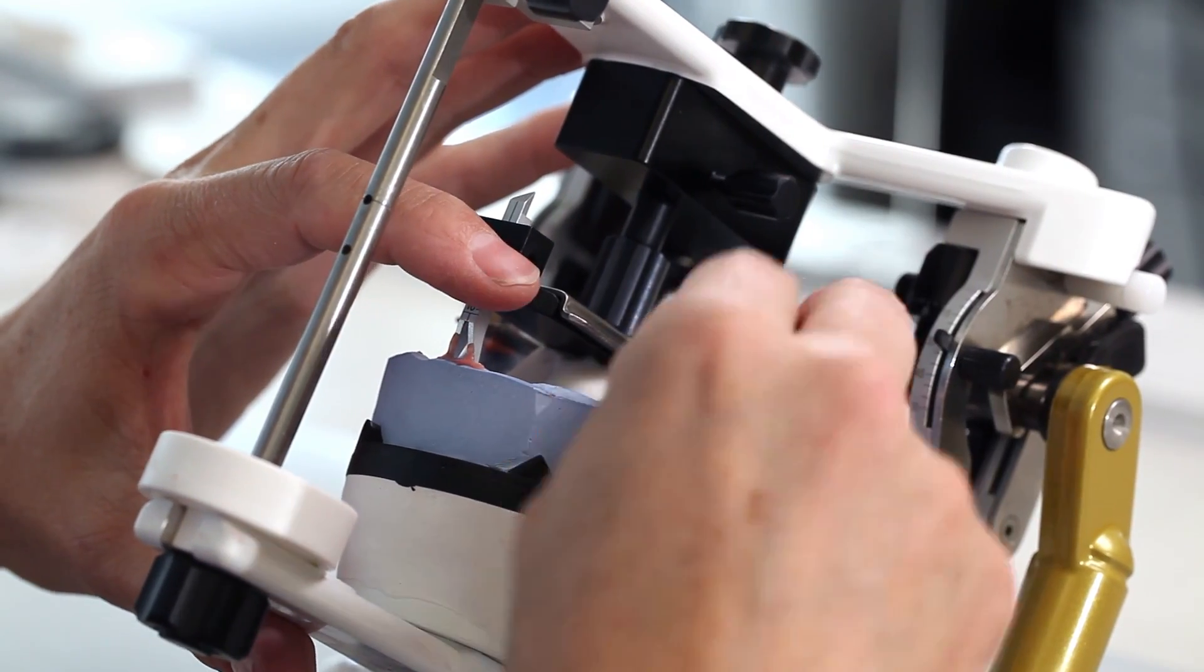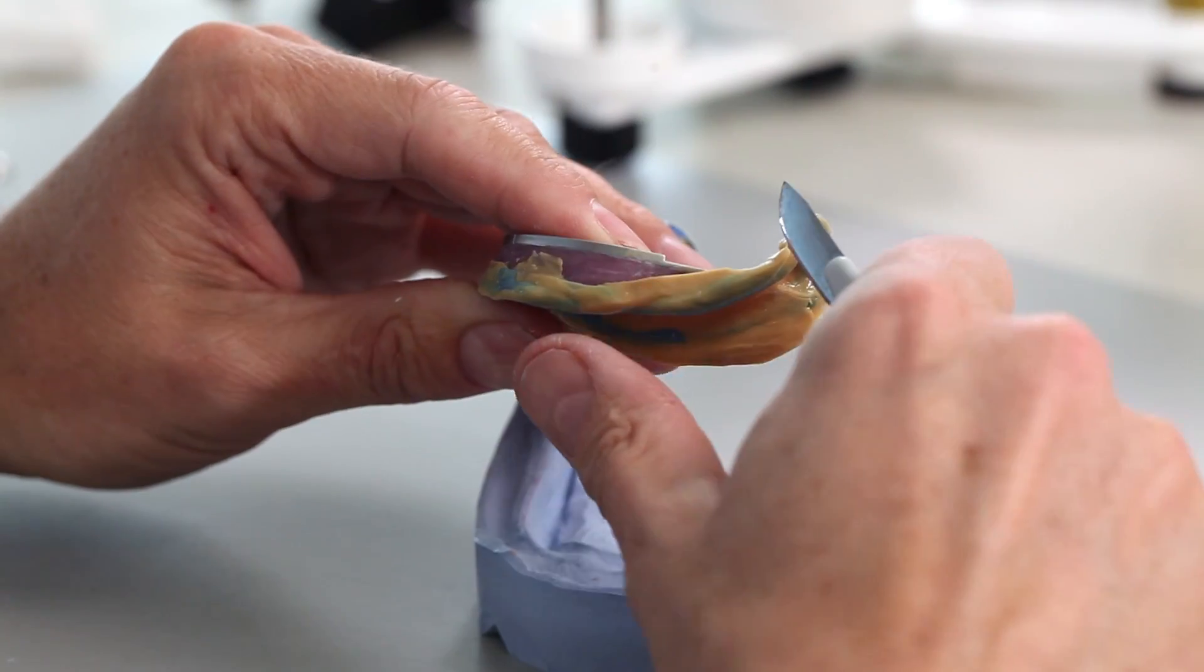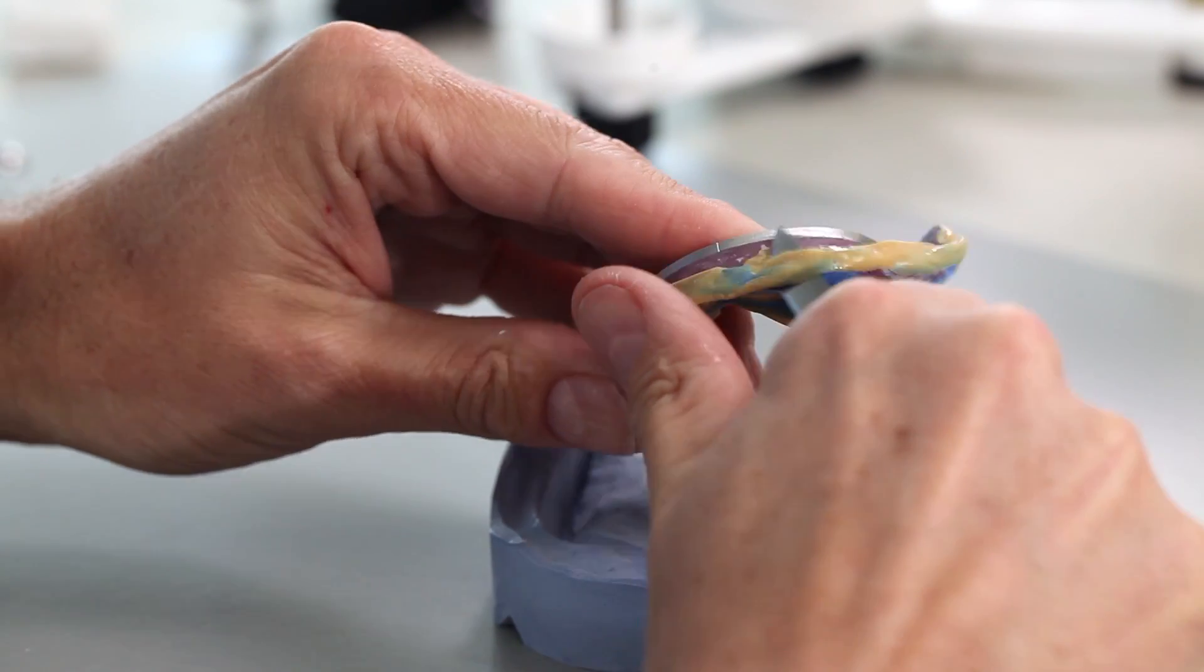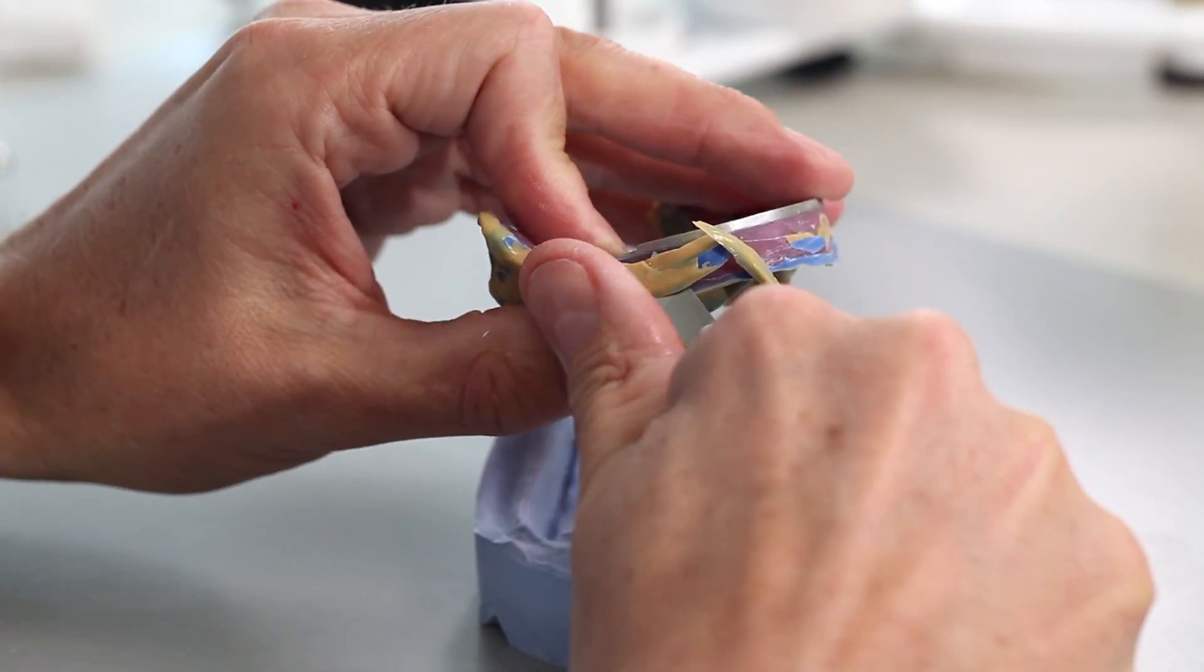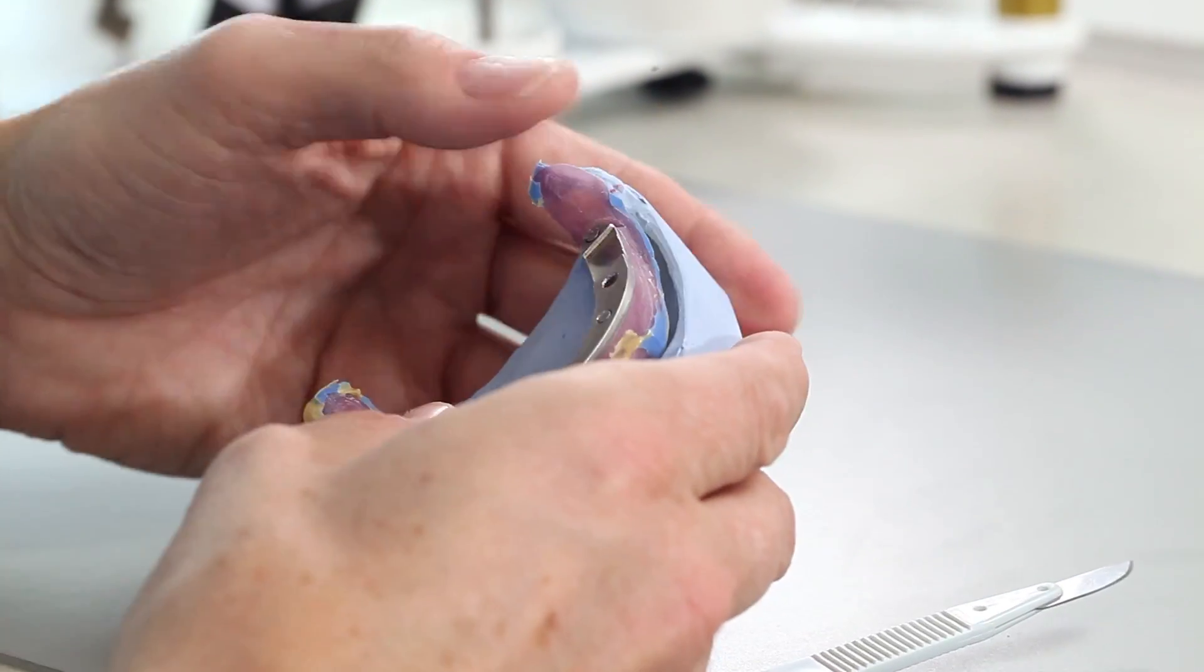Then, cautiously remove the horizontal guide and clean the mandibular model. Cut back the functional impression of the lower jaw on the vestibular side. Check whether it closely fits the model.